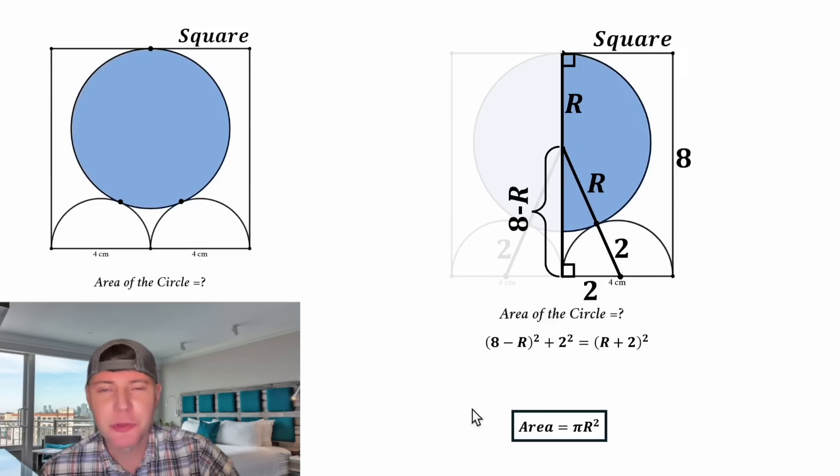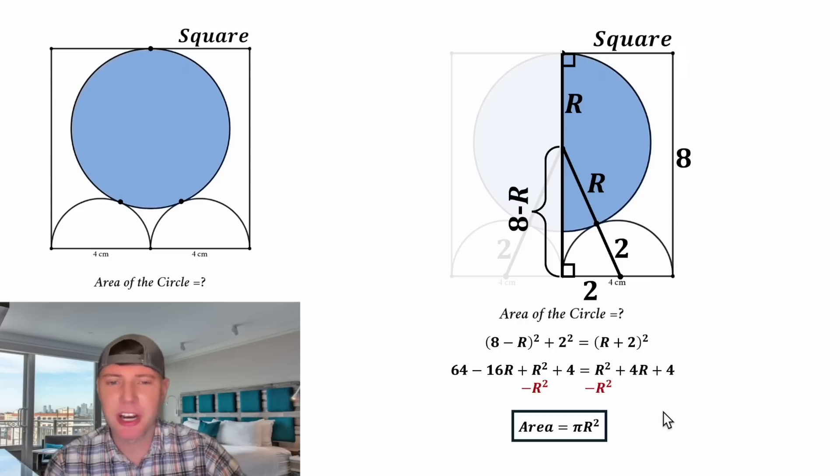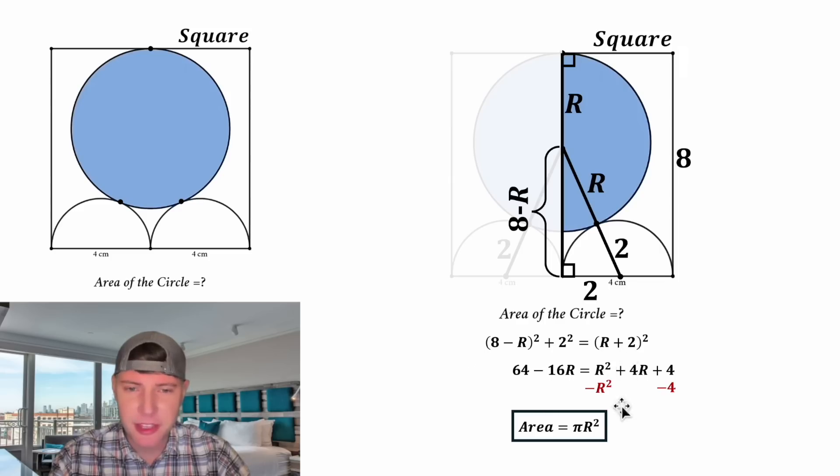After we multiply this first one out, we end up with 64 minus 16 big R plus big R squared. And then we're going to add to that two squared, which is four. And then on the right hand side, this multiplies out to big R squared plus four big R plus four. Both sides of this equation contain a big R squared and a four. So let's subtract big R squared and four from both sides. On the left hand side, all of this is going to cancel out. And then on the right hand side, these are going to cancel and these are going to cancel. So we end up with 64 minus 16 big R equals four big R.